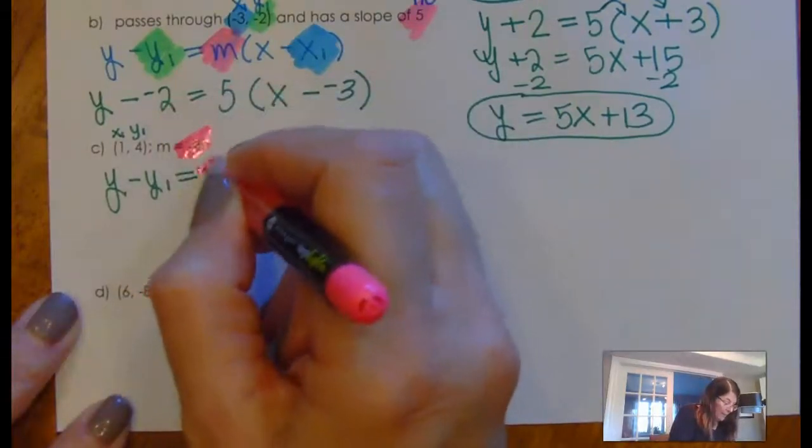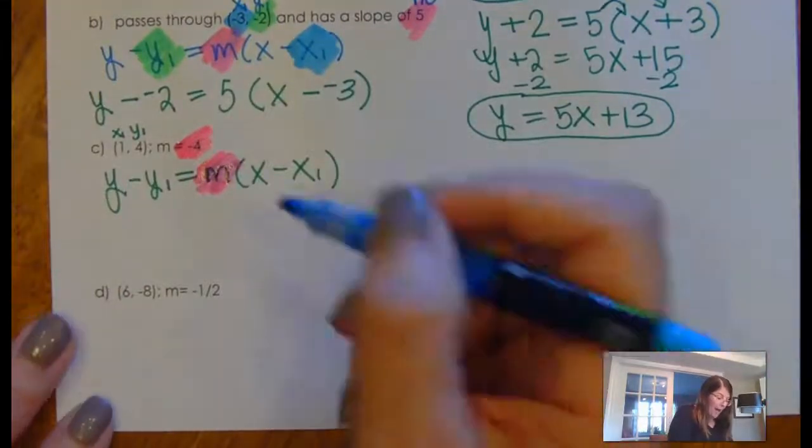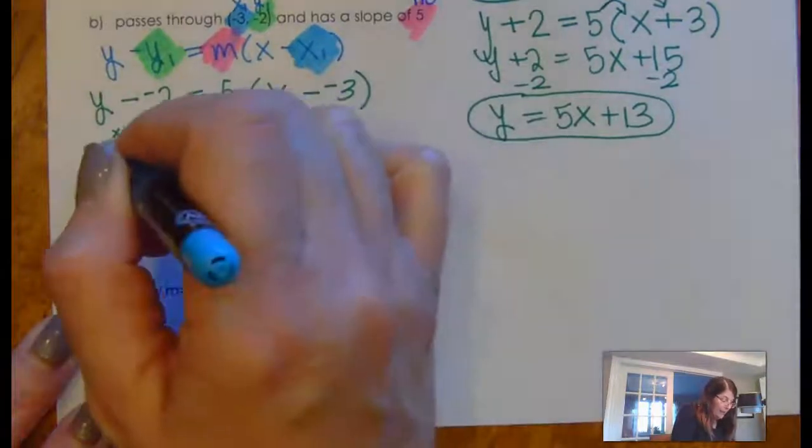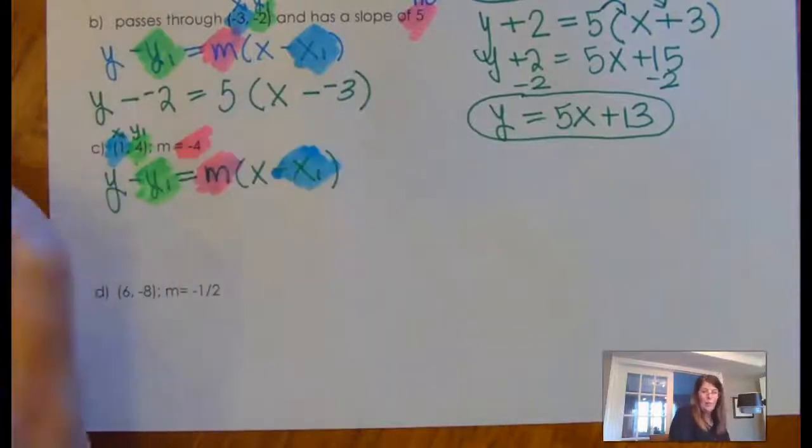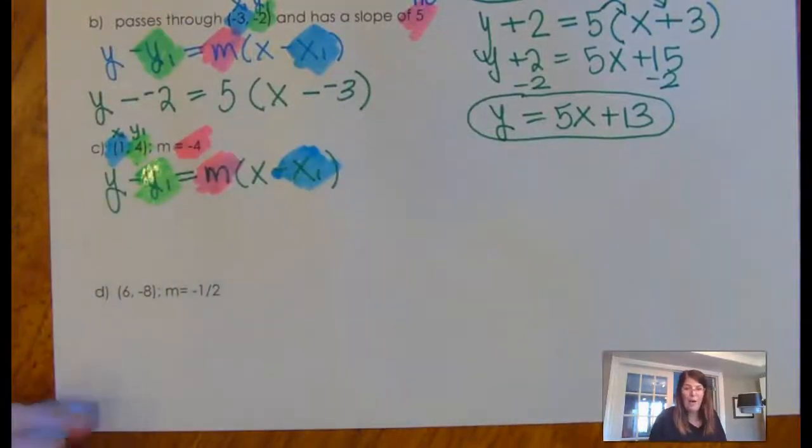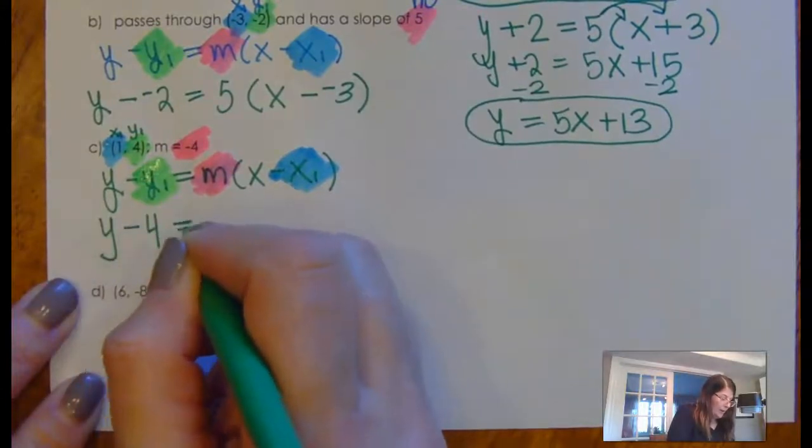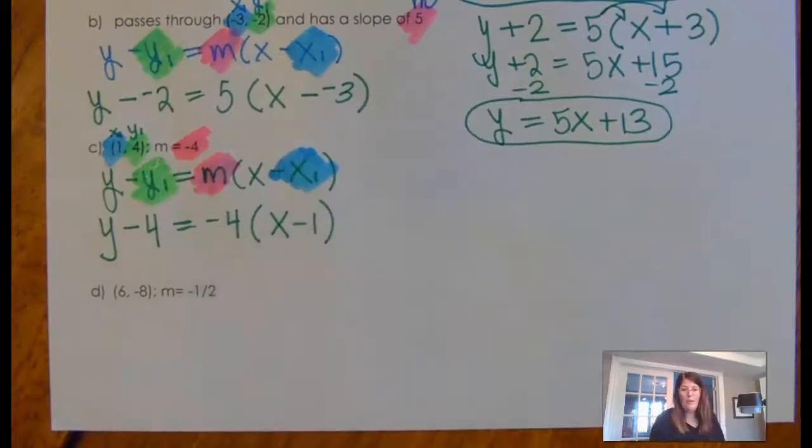I know M is the slope. So, that's going to be what goes right there. I know X1 is the number that is in the X spot here. And I know Y1 that I'm going to replace is the number that's in the Y spot. So, now, I'm just plugging all this stuff in here. Y minus 4 is negative 4 times X minus 1. Okay. I just wrote the equation in point slope form. That's it.